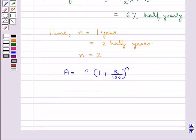Now, the formula for amount is, the amount A is equal to principal P multiplied by 1 plus rate of interest R upon 100 whole to the power time n. So, now, we will substitute the values for P, R and n.